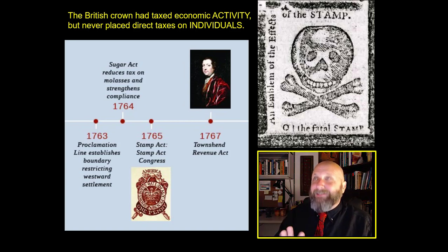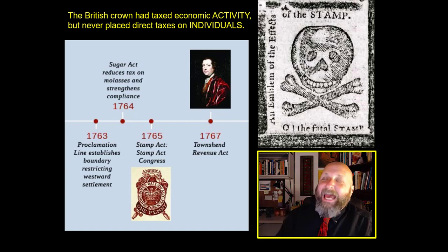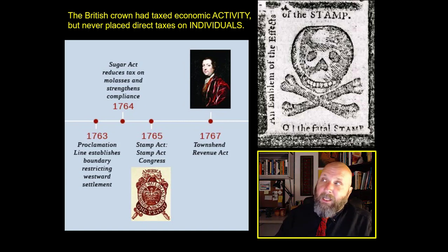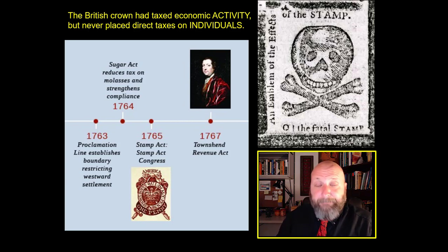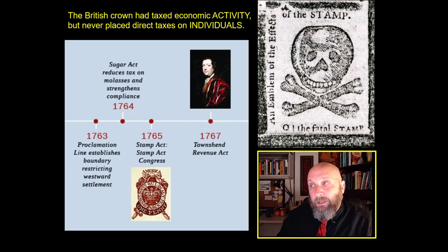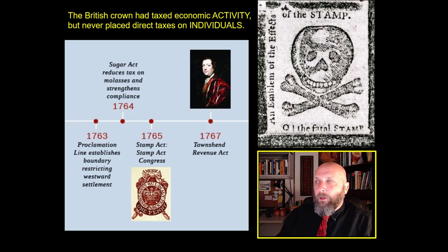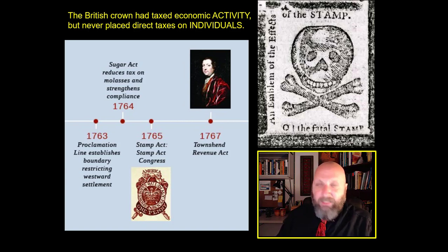Then Grenville comes with the Stamp Act — the straw that broke the camel's back. The Stamp Act is a tax on all published material. There are two big problems with these taxes. One: what are they for? Grenville says we need revenue to pay off creditors and to maintain the British Army, which has been left scattered throughout the colonies after winning its victories in North America. This confuses the colonists quite a bit — they're asking: what's the army doing here? To protect you. From the French? The French are gone. From the Indians? We can handle the Indians. And a lot of suspicion grows about what those British regiments are doing in the colonies.